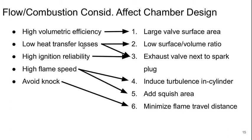We can have high ignition reliability from doing that too. We can get high flame speed by inducing turbulence inside the cylinders, as well as by adding squish area — we'll talk about what that is in a minute. And we can avoid knock by minimizing how far the flame has to travel.